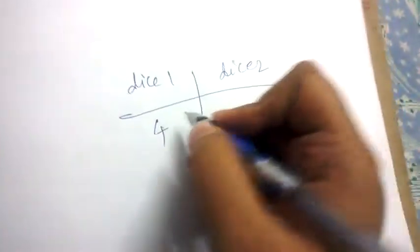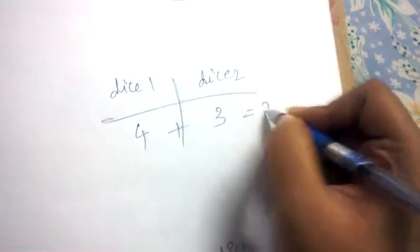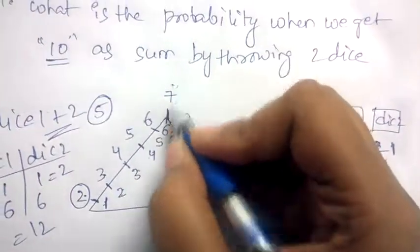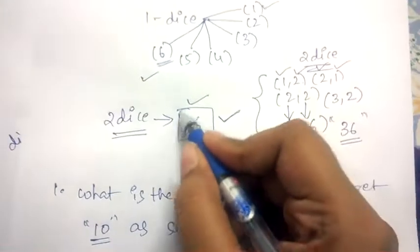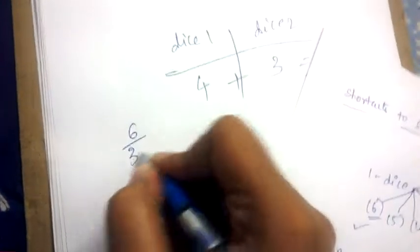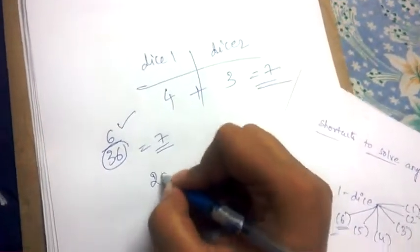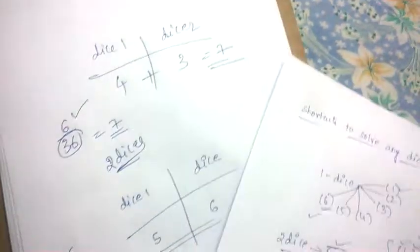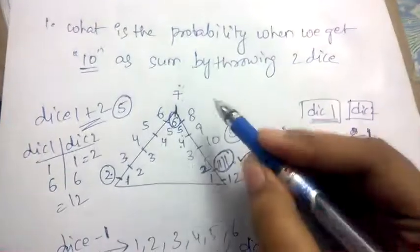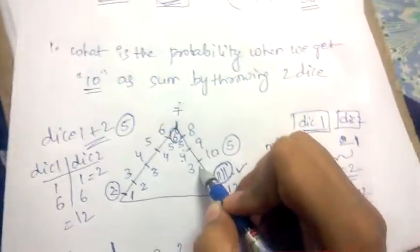Let's take another example: dice one gave four and dice two gave three. Adding both gives seven. Look at seven in the triangle — in front of seven we have six. So the answer is six out of 36 — six times out of 36 you can get a sum of seven when you throw two dice. This way you can easily find the sum and its probability.